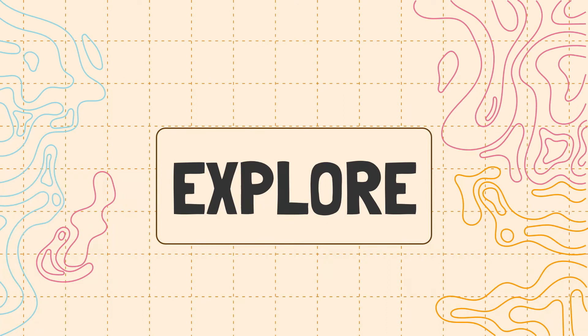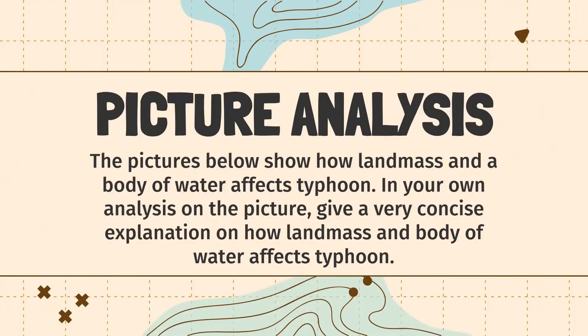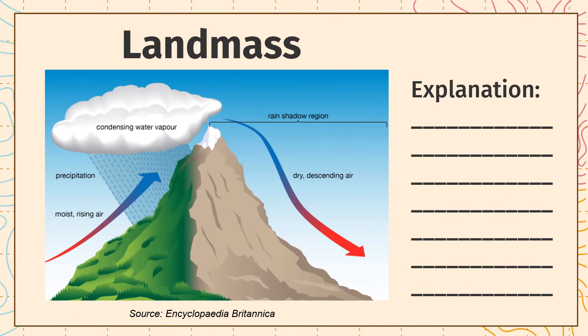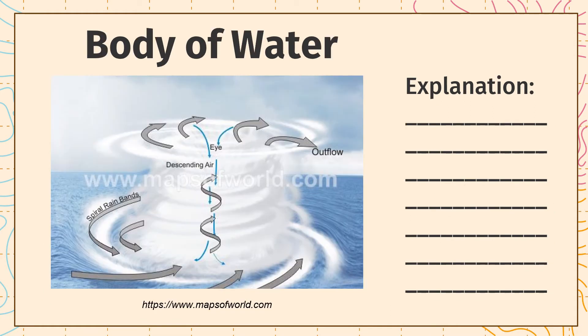Explore — Picture analysis. The pictures below show how landmasses and bodies of water affect typhoons. In your own analysis of the picture, give a concise explanation of how landmasses and bodies of water affect typhoons. Here is the first picture: Landmass. Please pause the video if you need more time in answering. Here is the second picture: Body of water.